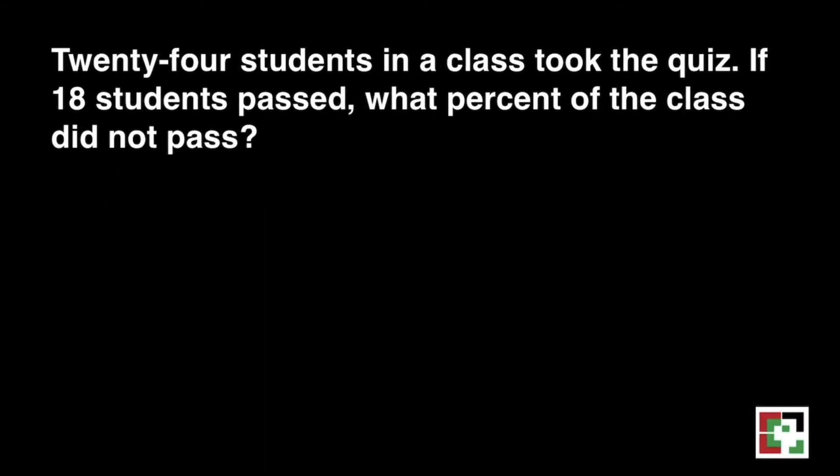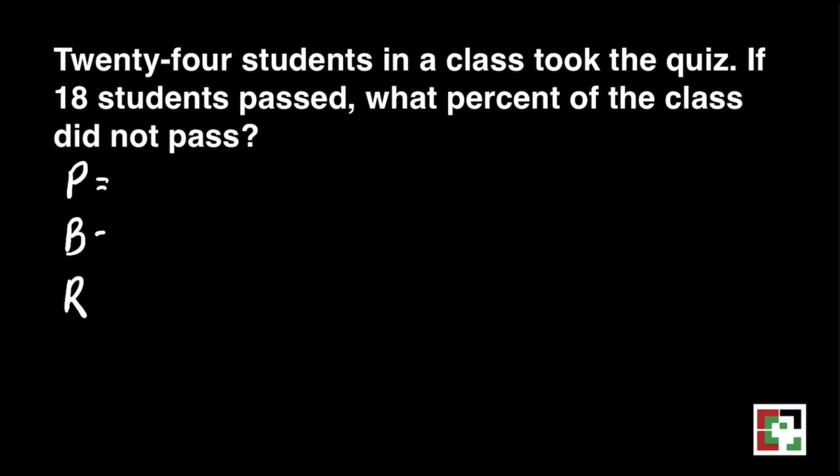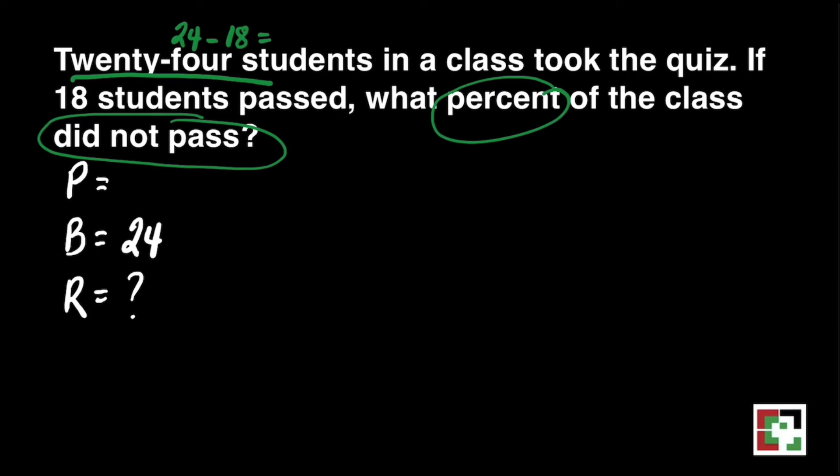We have the last problem here. 24 students in a class took the quiz. If 18 students passed, what percent of the class did not pass? Let's identify first our percentage, base, and rate. Our rate is what we're looking for. And then our base is 24 because it's the total number of students that we have. And for the percentage, the number of students who did not pass. So that's 24 minus 18 is equal to 6. So our percentage is 6.